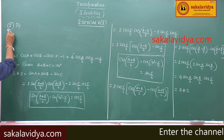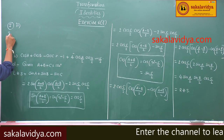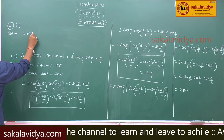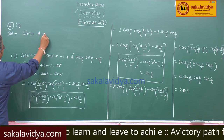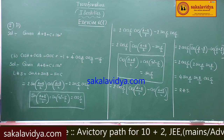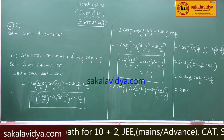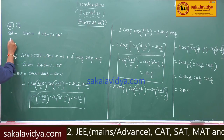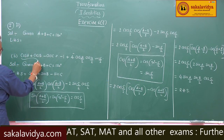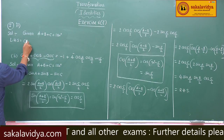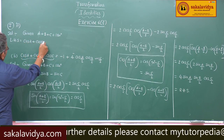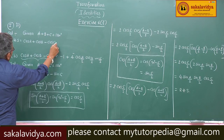Second solution. Given that a plus b plus c is equal to 180 degrees. Now, on the left hand side we have to consider cos a plus cos b minus cos c.